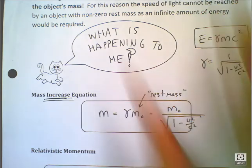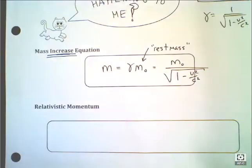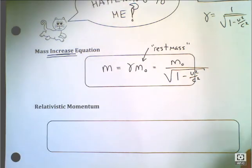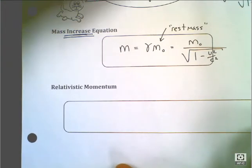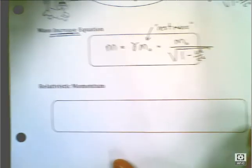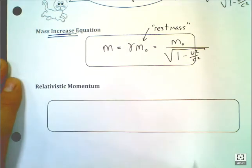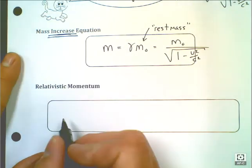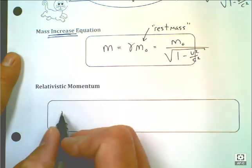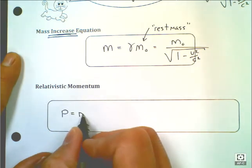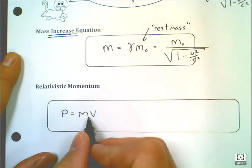You can use this to find out how much of the energy went into increasing the mass of the object. This leads us to another concept, which is relativistic momentum. We haven't learned about momentum yet, but the mathematical representation for momentum is P equals MV.